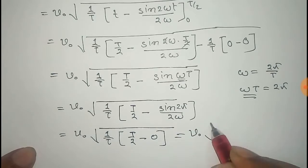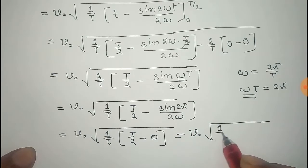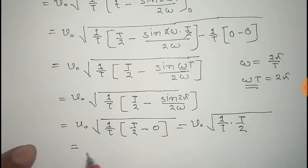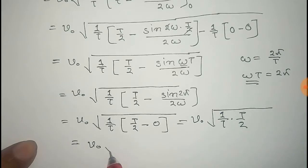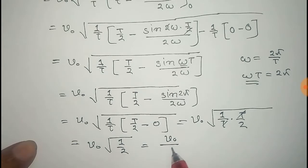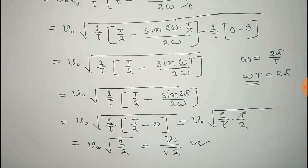That equals V₀ times square root of (1/2), which equals V₀ divided by √2. This is the RMS value of the full-wave rectifier.